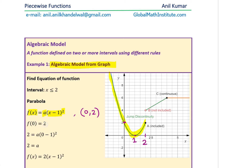To get the value of a, we consider a point on the curve — the y-intercept at (0, 2). Substituting 0 for x and 2 for f(x): 2 = a(0 − 1)² = a · 1, so a = 2. This gives us the parabola f(x) = 2(x − 1)² for x ≤ 2. It is less than or equal to 2 because the circle at that endpoint is filled in.